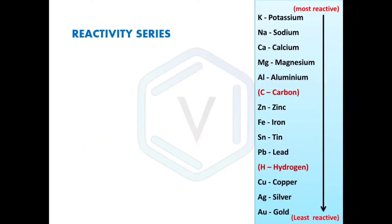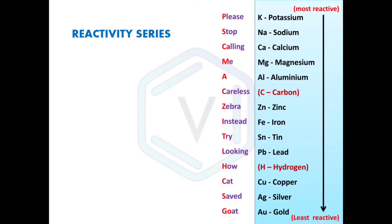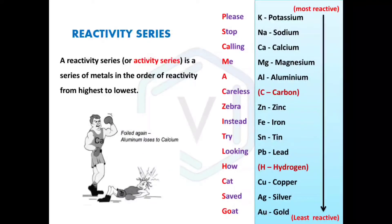Before looking at examples, it's important to know about the reactivity series, in which metals are arranged in order of reactivity from highest to lowest. Carbon and hydrogen, which are non-metals, are also placed in the reactivity series because in metal–non-metal displacement reactions you need to know the reactivity of a non-metal with respect to the metal involved. Here is a mnemonic to remember the reactivity series: 'Please stop calling me a callous zebra, instead try looking how cat saved goat.'